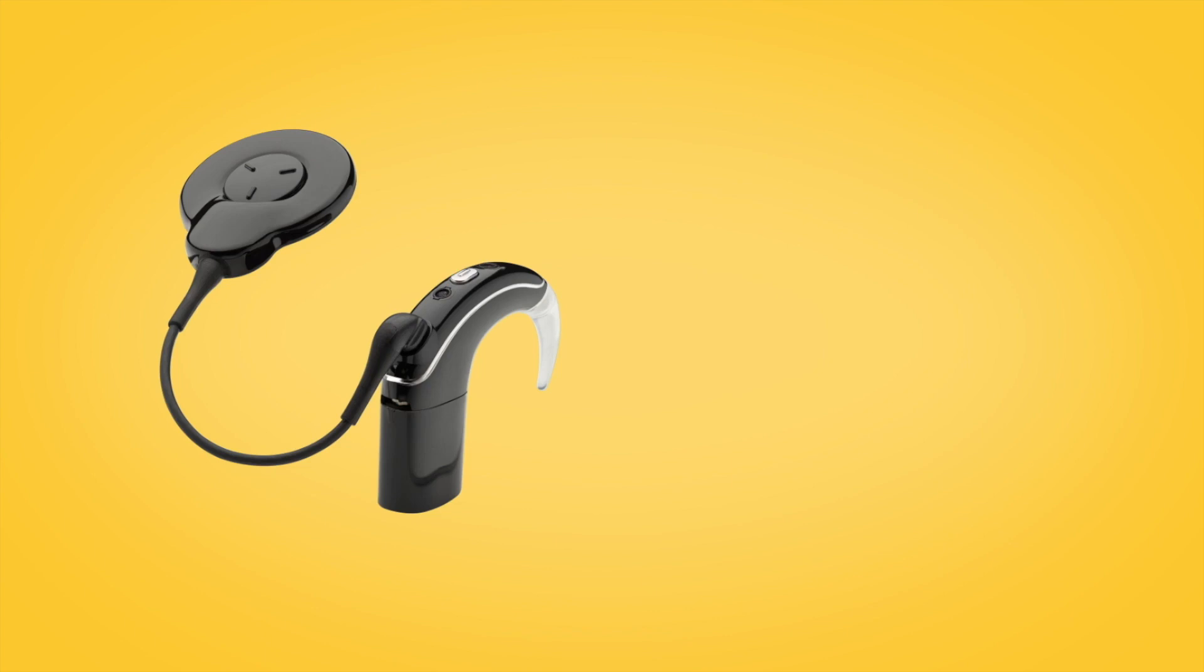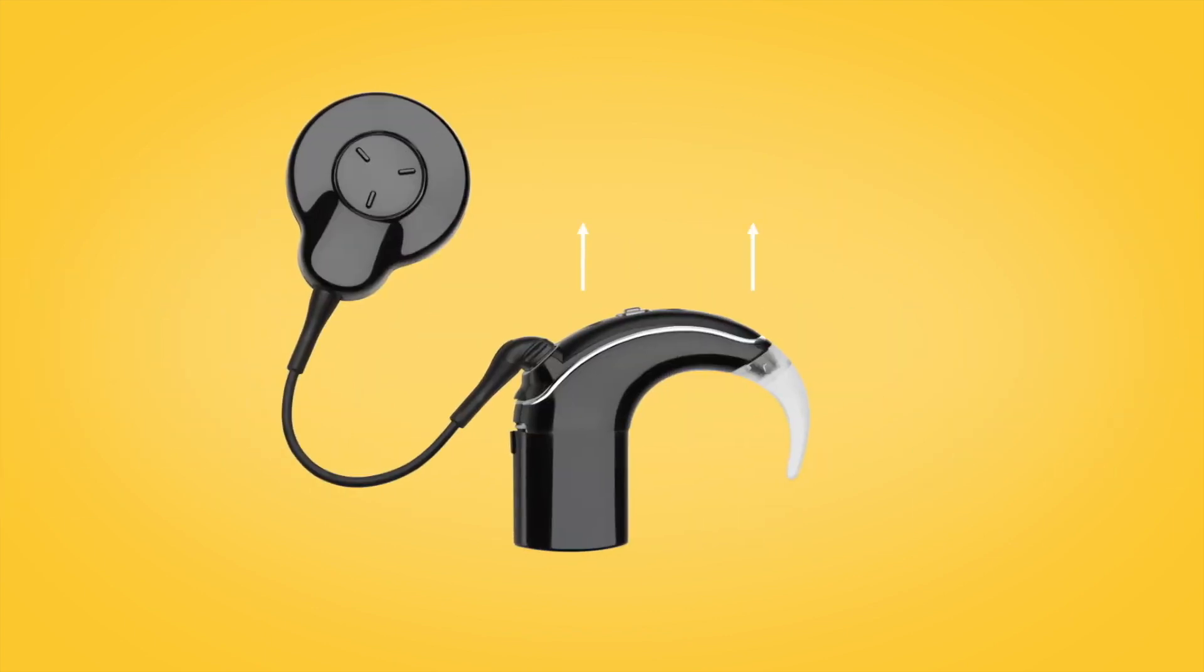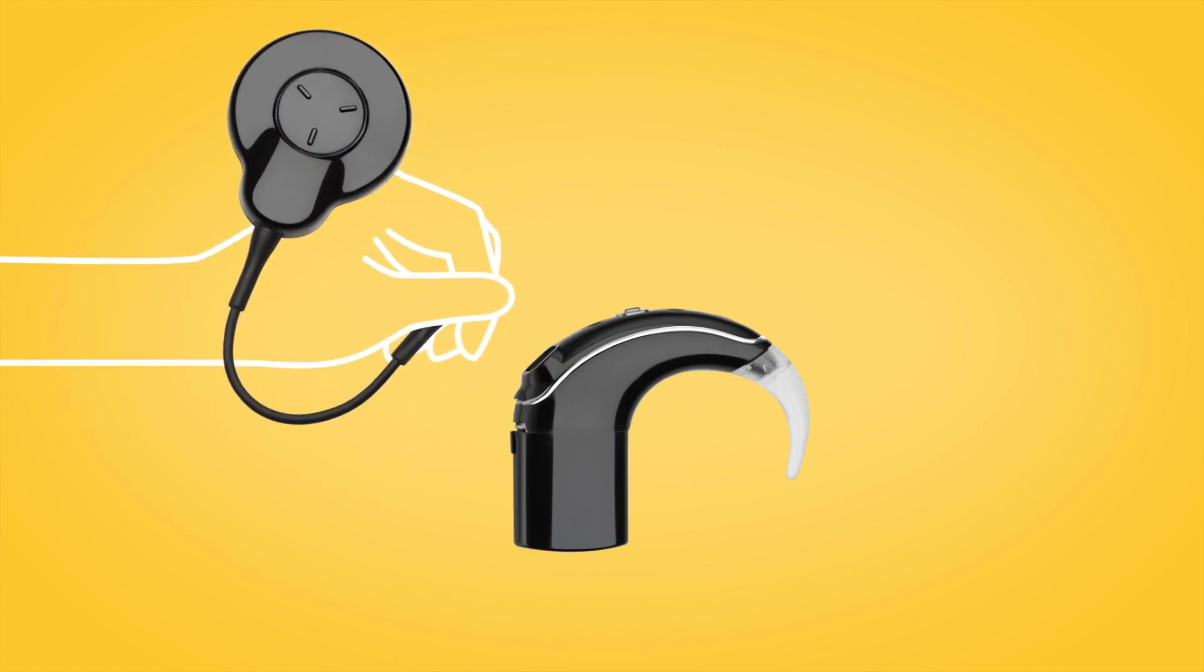First you need to remove the old microphone cover. Hold the coil cable grip and firmly pull it straight out of the sound processor.